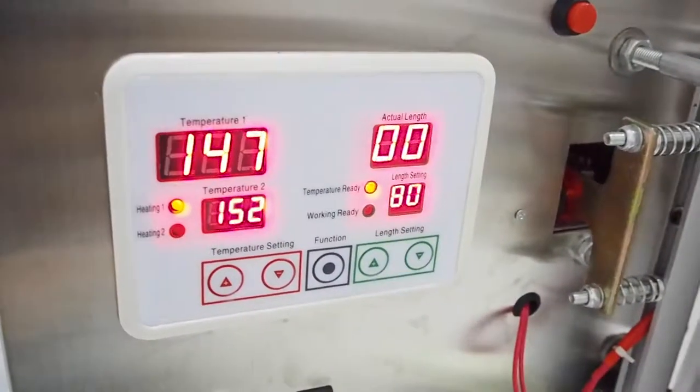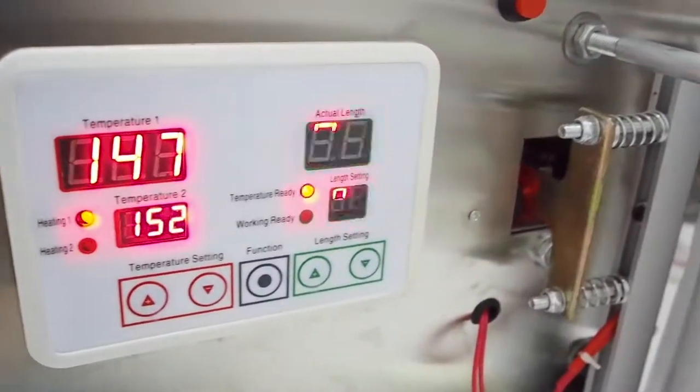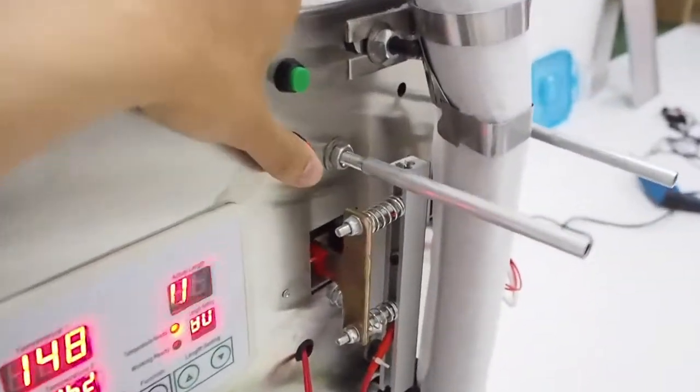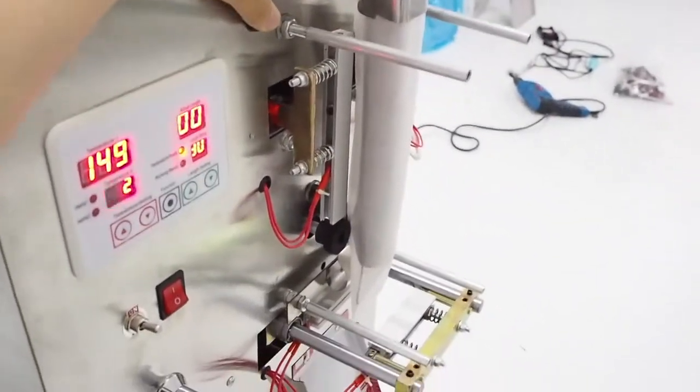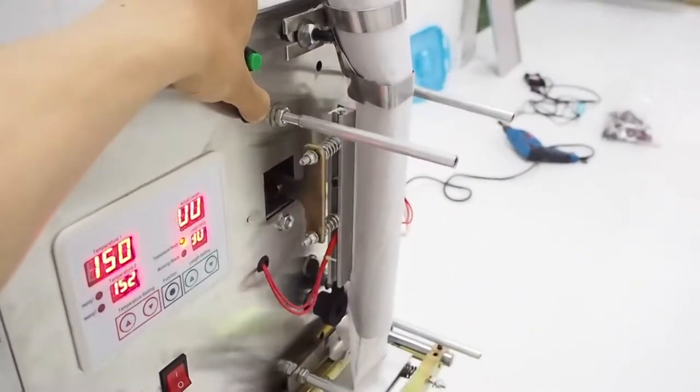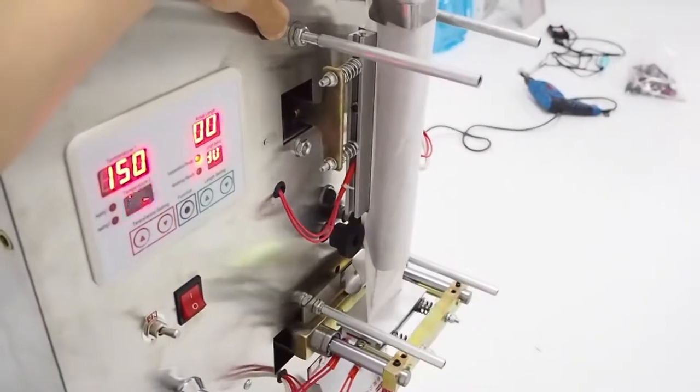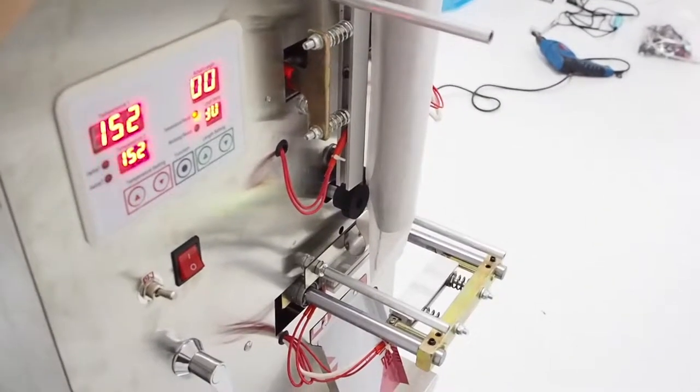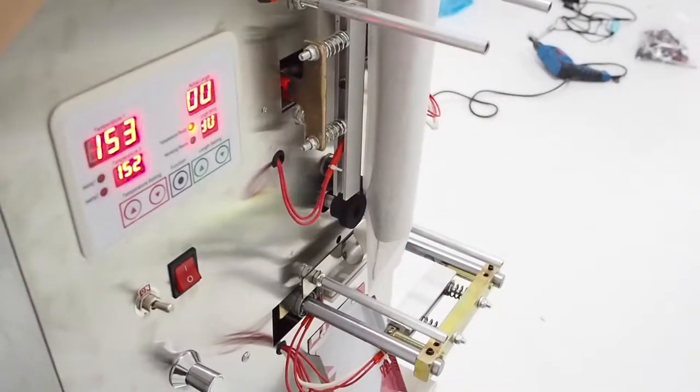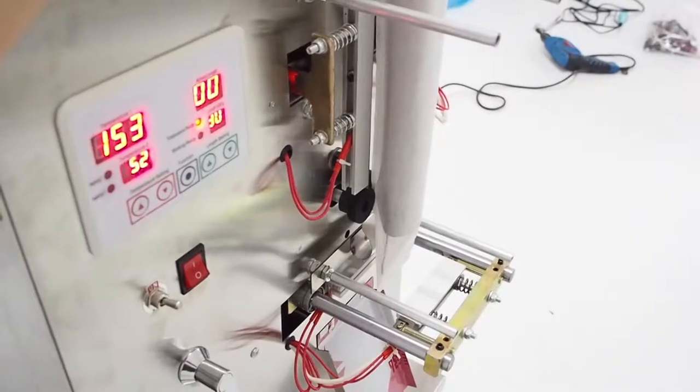That means the machine is ready to work. You can use the red button here to test the manual cutting function. And the green button here is for the pulling wheel to fold down the bag.